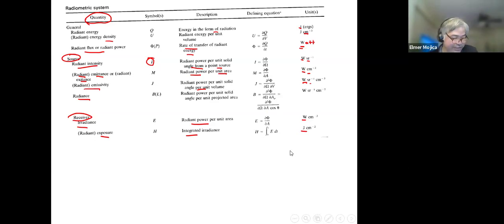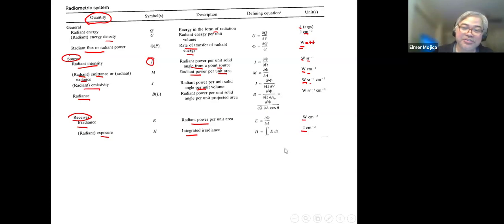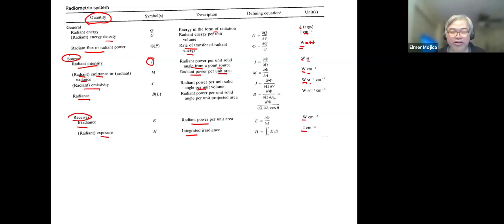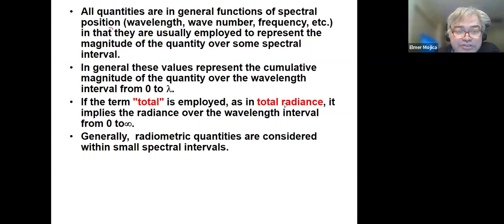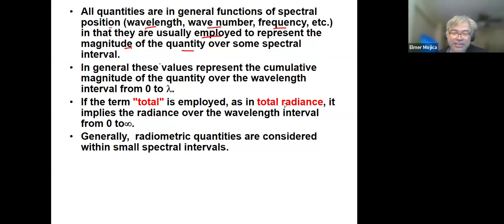This is just the radiometric system — there is also the photometric approach. All quantities are in general functions of spectral position: wavelength, wave number, frequency; and they are usually employed to represent the magnitude of the quantity over some spectral interval.